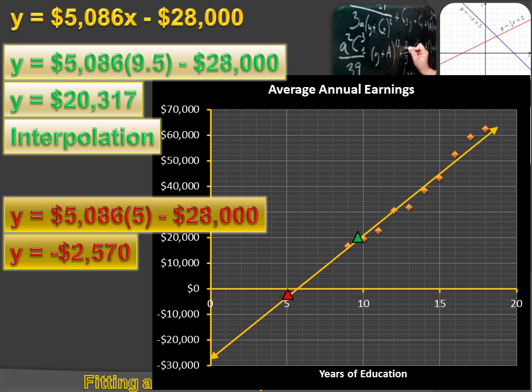And we call that kind of projection an extrapolation. Extrapolation. It's a point that's extra or outside the data points in our data set.